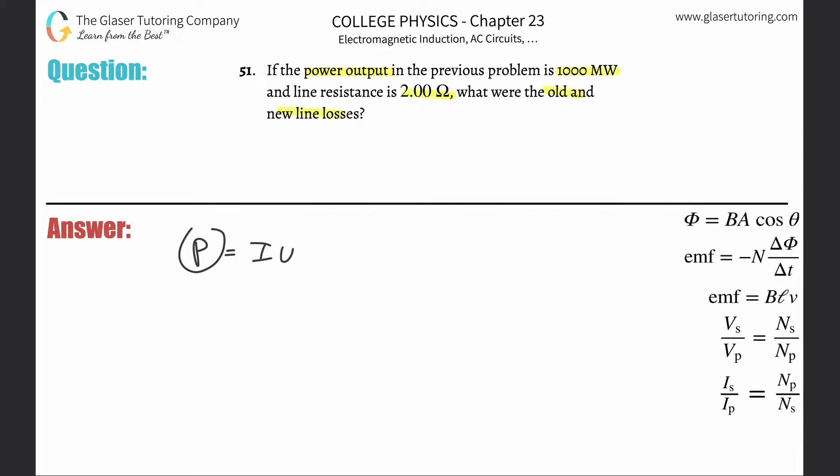If I know this output power here is going to be 1000 megawatts, and by the way, that would be 1000 times 10 to the 6th watts, and I also know from the prior problem that the output voltage there was going to be 335,000 volts. Again, check out number 50. I can find the output current.